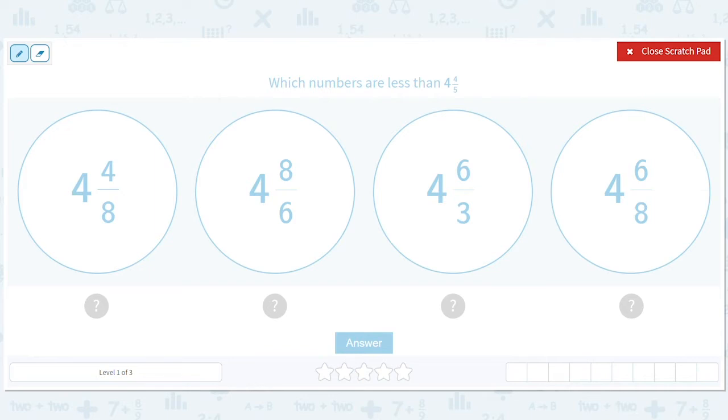Four-fifths is less than one. Eight-sixths is greater than one. That's ruled out. Six-thirds is greater than one. That's ruled out. So four-eighths is one-half. One-half is definitely less than four-fifths. So we feel good about that choice.